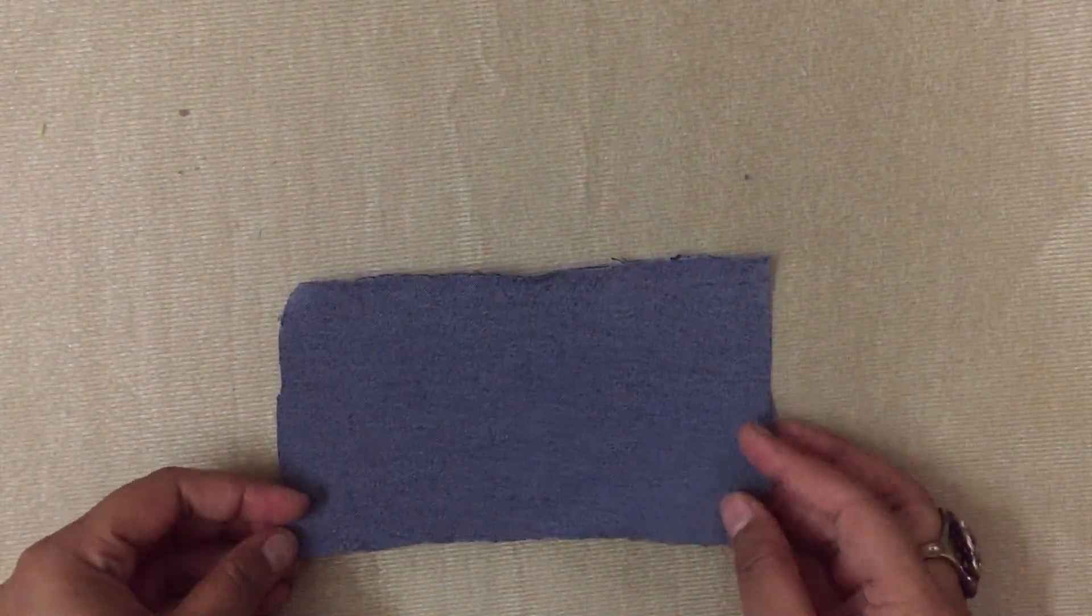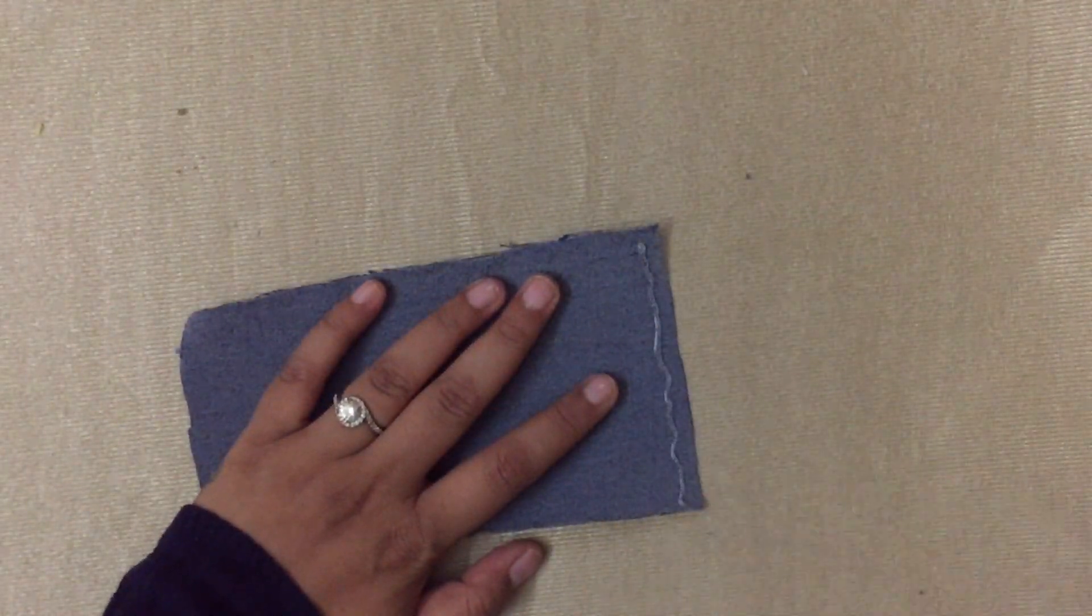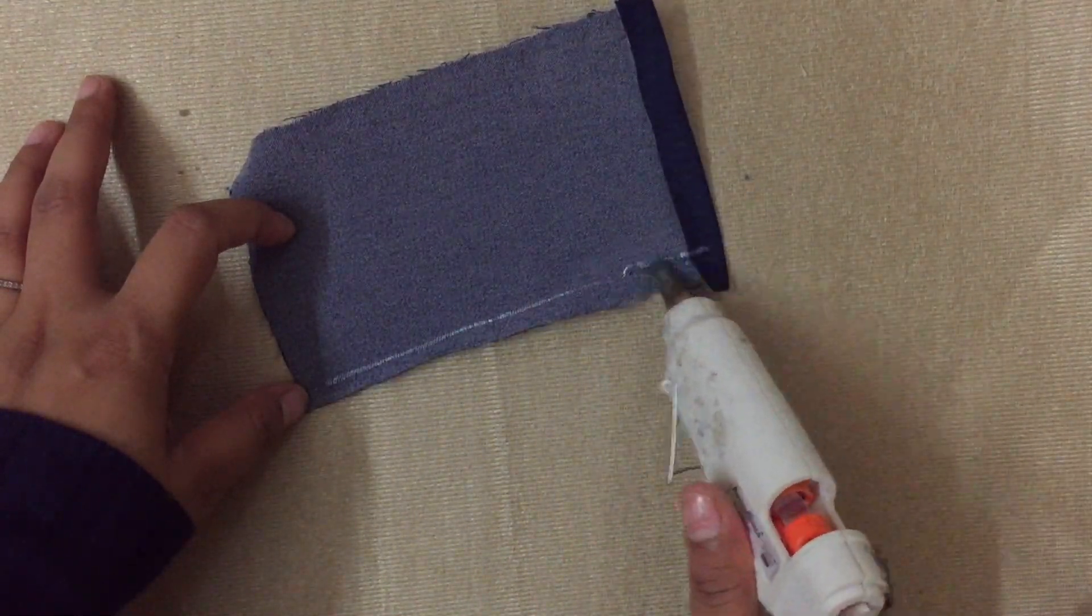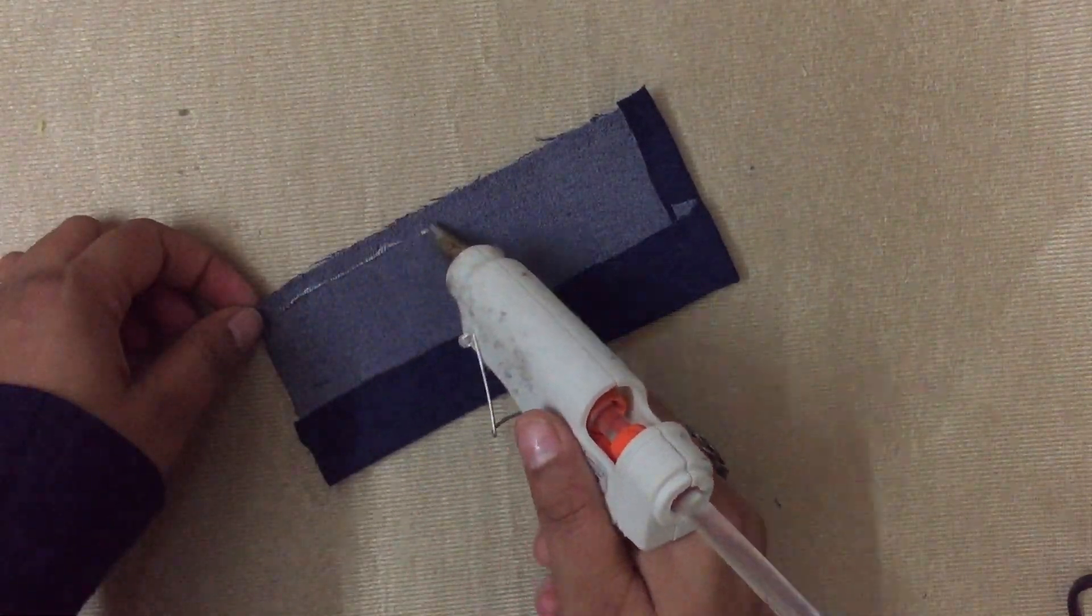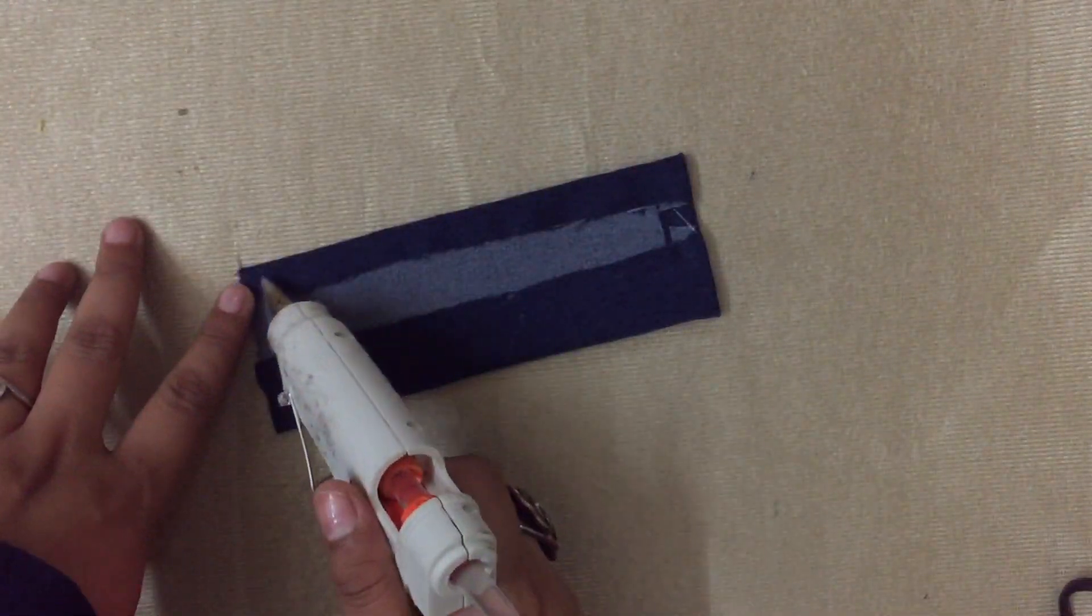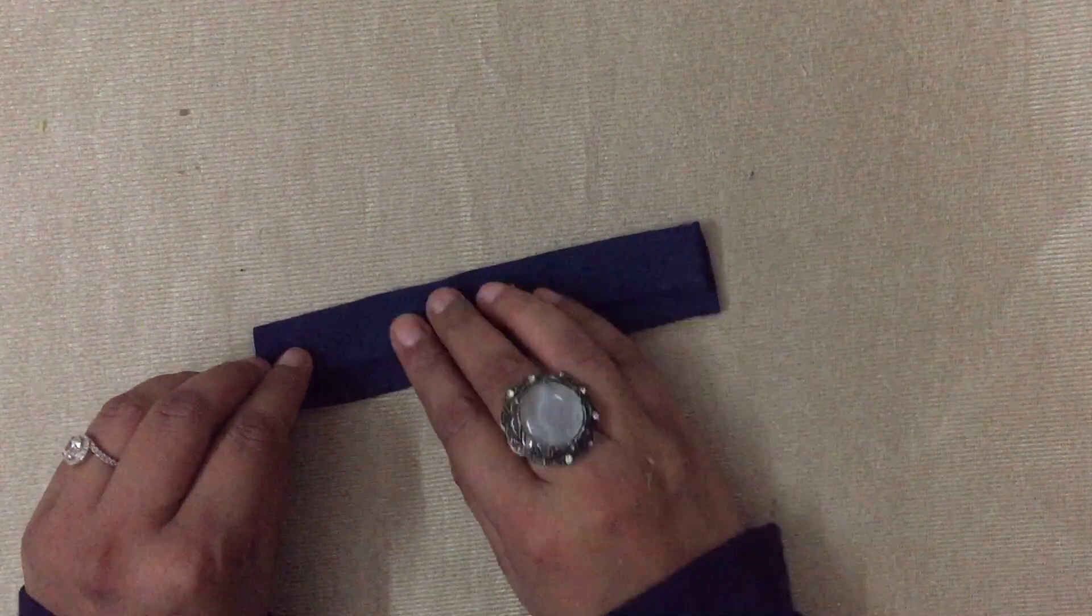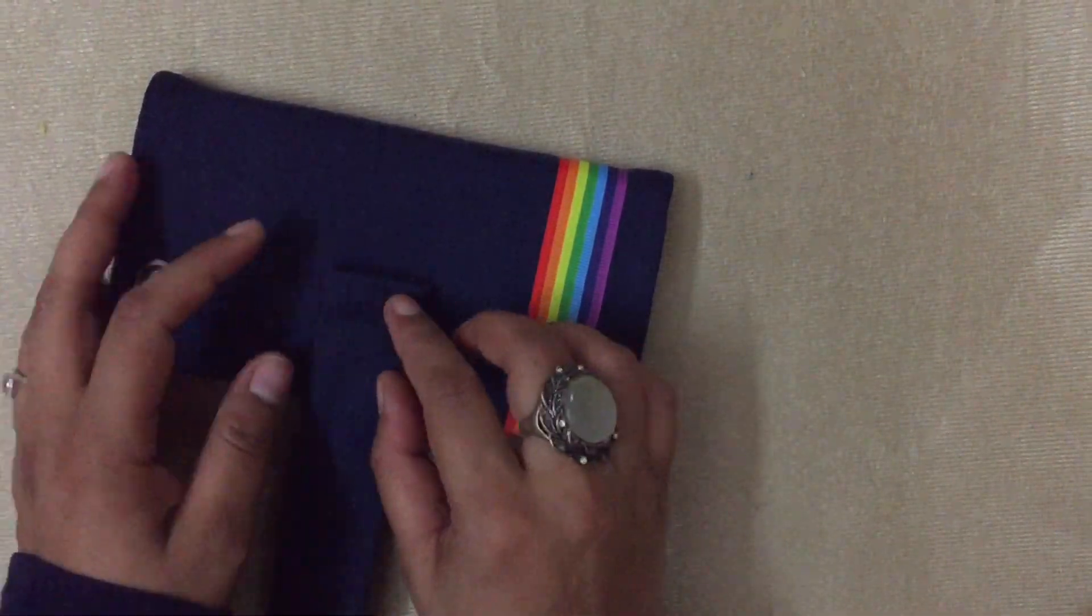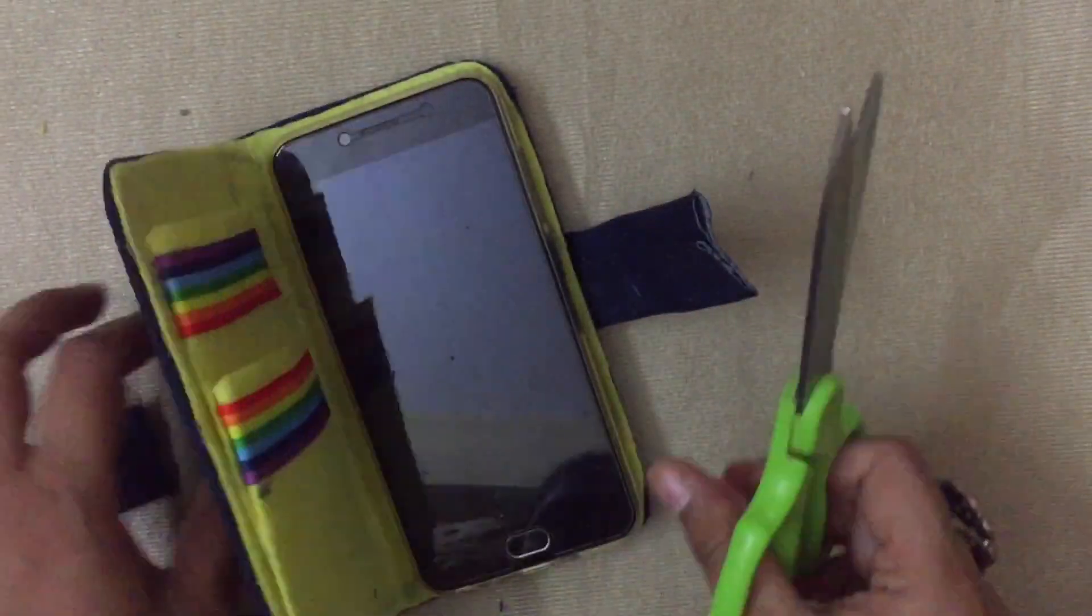To make the flap of the phone, I took a piece of denim fabric. I then proceeded to fold it and glue it like so. I then glued this piece to the back of the cover like so. I then cut off the excess fabric.